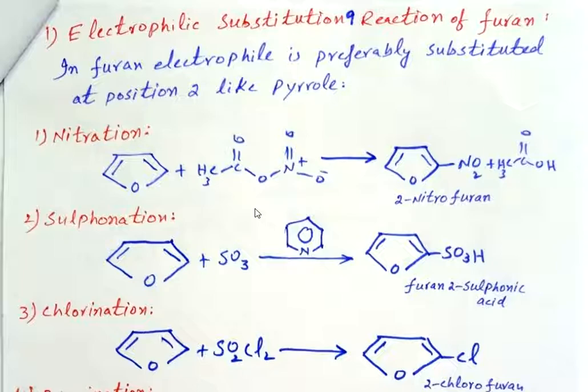In electrophilic substitution reactions, first we start with nitration. In the nitration reaction, a nitro group is introduced to furan at position 2 by treating acetyl nitrate with furan. As a result, we get 2-nitrofuran.